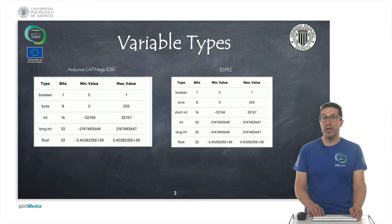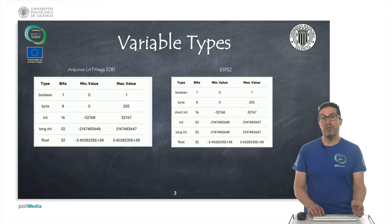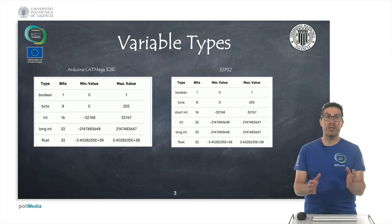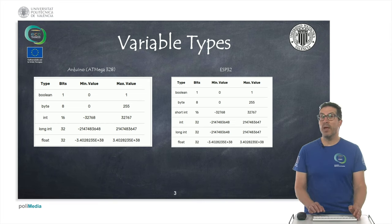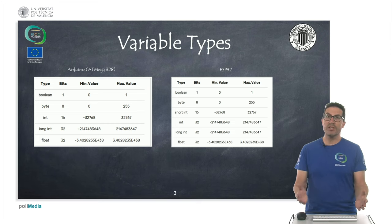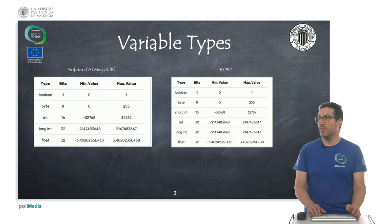In any programming language we use variables to store data. Depending on the platform and architecture, the variable types might change. In these tables you can see the numeric variables used to store numbers. We have booleans which store 0 or 1 and occupy 1 bit. Then a byte uses 8 bits and can store positive numbers between 0 and 255. A char is a character encoded in an 8-bit number, similar to a byte. For larger numbers we use ints — in Arduino, ints use 16 bits, while in ESP32 processors ints use 32 bits.